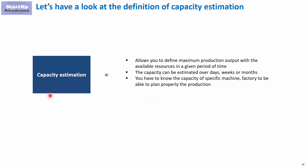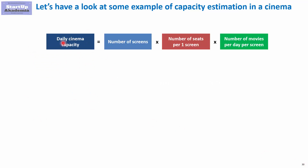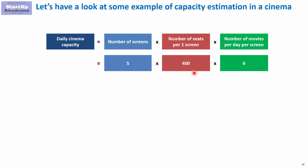Let's have a look at an example to help you understand capacity estimation. Imagine you are working in a cinema, where daily capacity — meaning the number of potential customers we can serve — depends on three things: number of screens, number of seats per screen, and number of movies per day per screen. So if we have five screens, 400 seats per room, and six movies per day, we can service up to 12,000 people daily, simply by multiplying those three numbers.